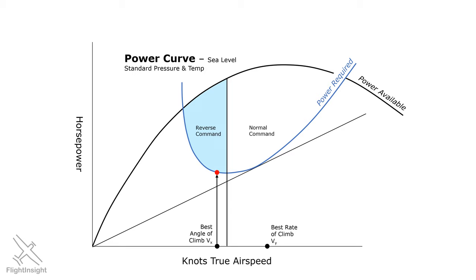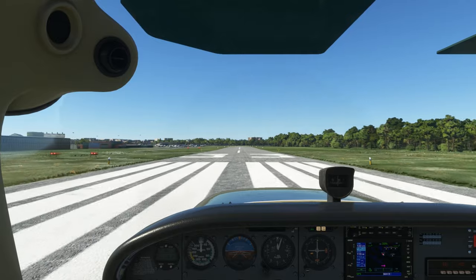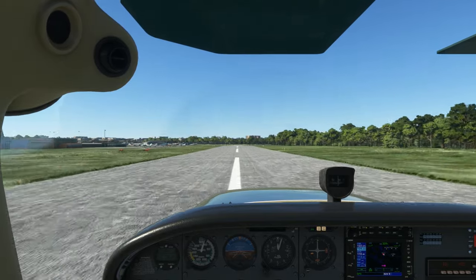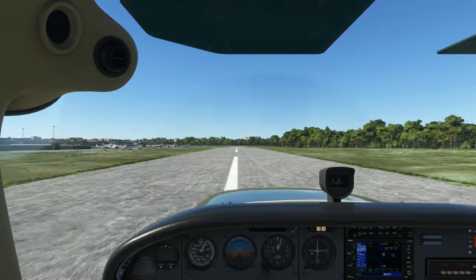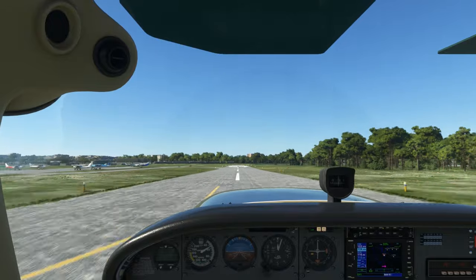It's also slower than both VY and the best glide speed VG. Flight at VX requires a lot more attention to pitch, power, and airspeed. In the region of reverse command a pitch increase won't result in the airplane gaining altitude. It'll only cause airspeed to bleed off even more getting closer to a stall.